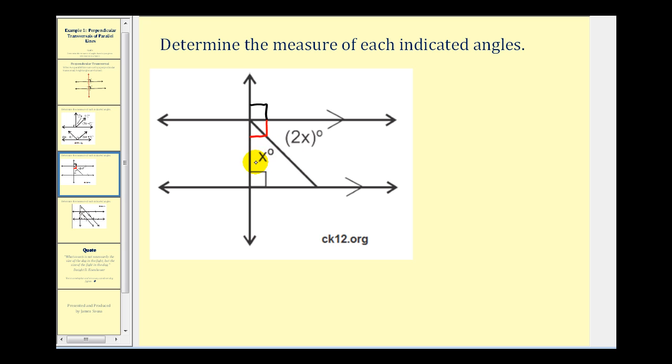So by using the angle addition postulate, we can conclude that x degrees plus 2x degrees must be equal to 90 degrees. Now leave off the degrees for right now. Let's go ahead and solve this equation for x. We would have 3x equals 90. We divide both sides by 3. We have x equals 30.